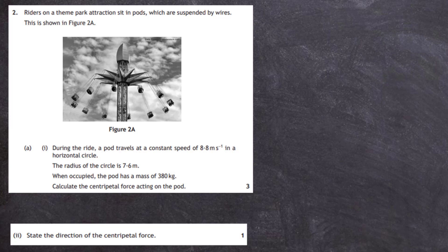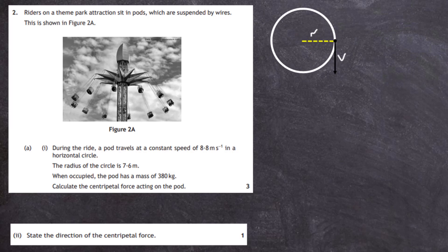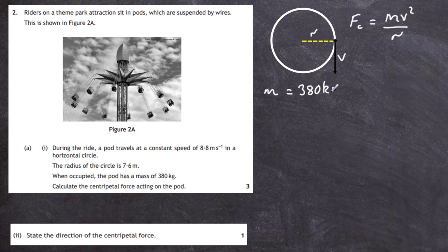Here we have a picture showing what's happening from above — that's the circle the pod travels in. We can see the radius r and the tangential velocity v, which is 8.8 meters per second. From our data books we know that the centripetal force of anything moving in a circle is equal to mv² divided by r. In this case, m is 380 kilograms, v is 8.8 meters per second, and r is 7.6 meters.